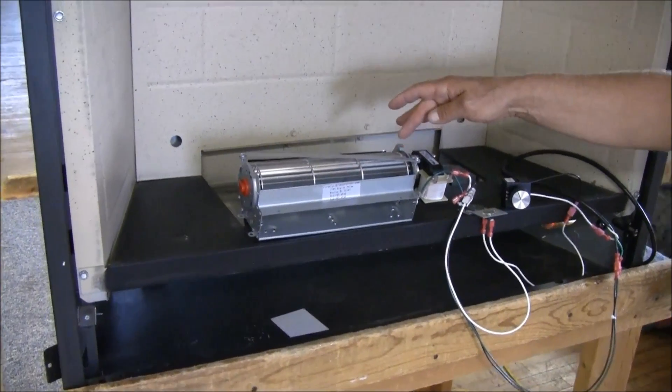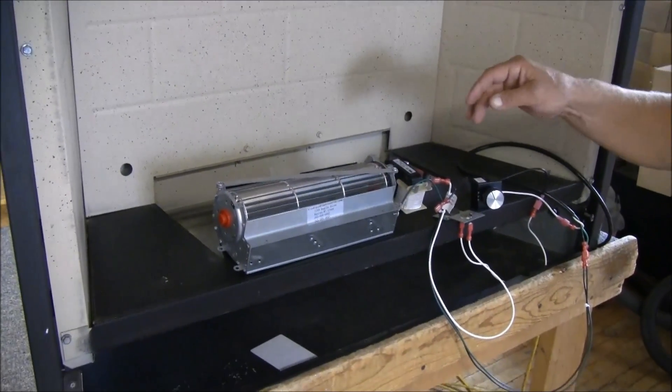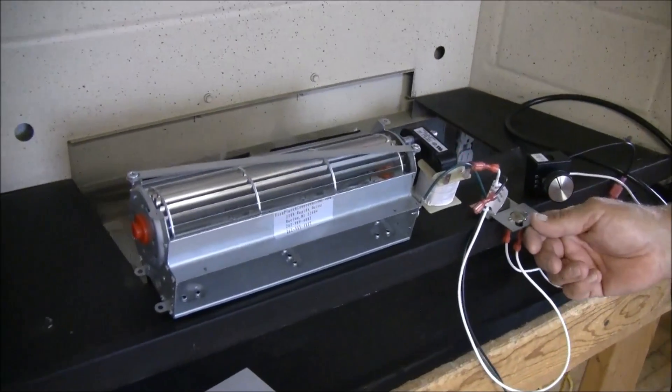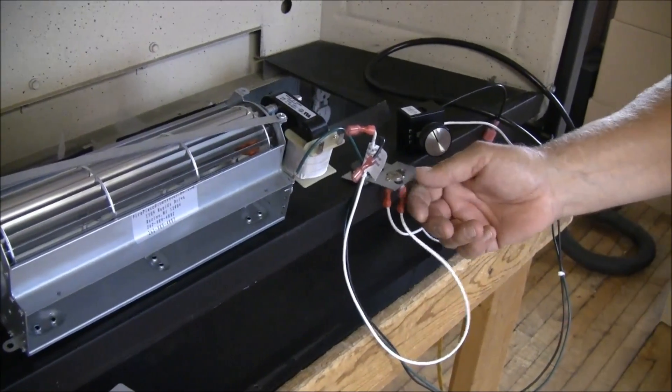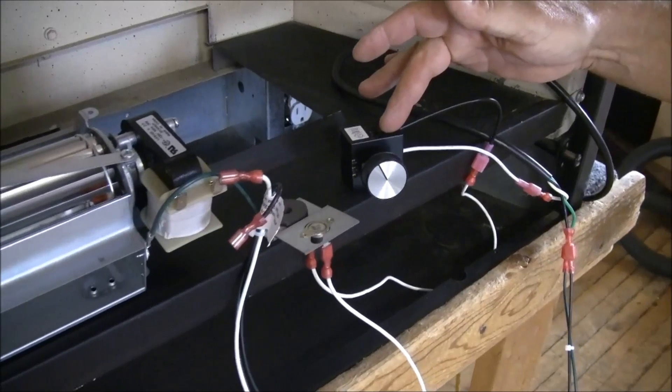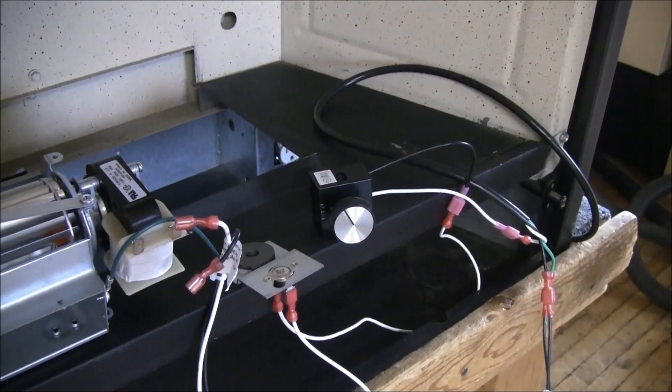So this is what comes with the GFK4 kit. You get the blower, you get the temperature sensor on a bracket with a magnet, your variable speed control, it's all wire harnessed together for you.